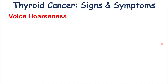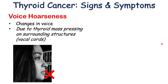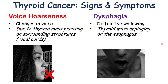Other signs and symptoms of thyroid cancer include voice hoarseness — changes in the voice, which can be disrupted, or in some cases patients can lose their voice entirely. This is due to the thyroid mass pressing on surrounding structures like the vocal cords and the recurrent laryngeal nerve. Another symptom is dysphagia, or difficulty swallowing. As the thyroid mass gets larger, it can impinge on the esophagus — the passage between your mouth and your stomach — making it difficult to get food down.